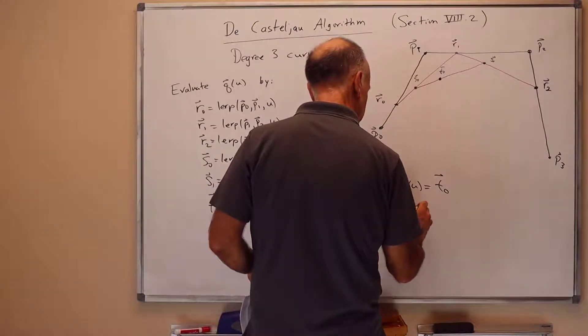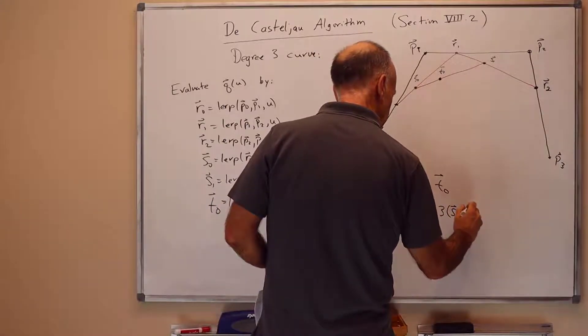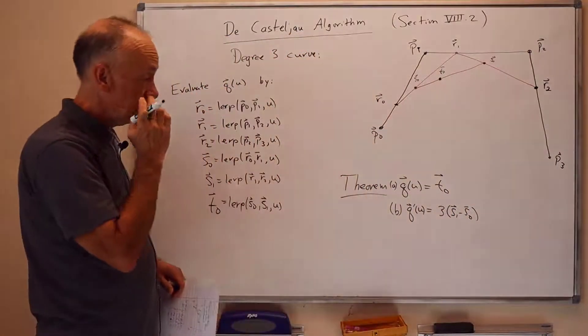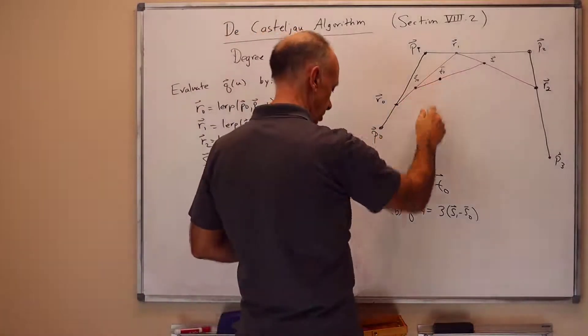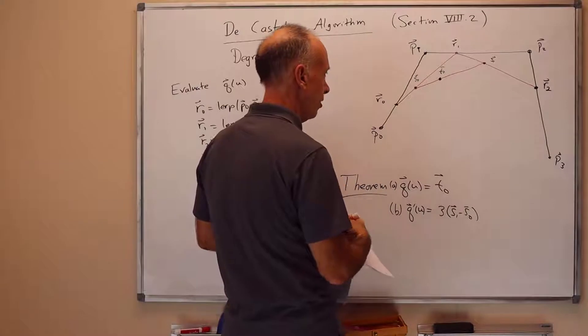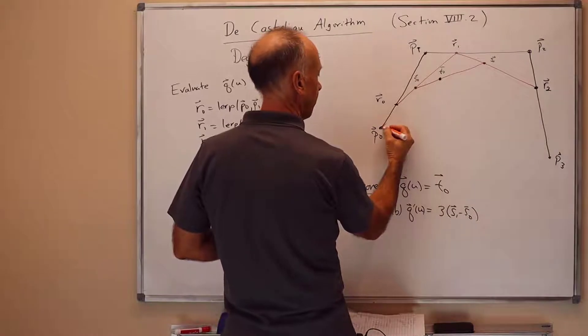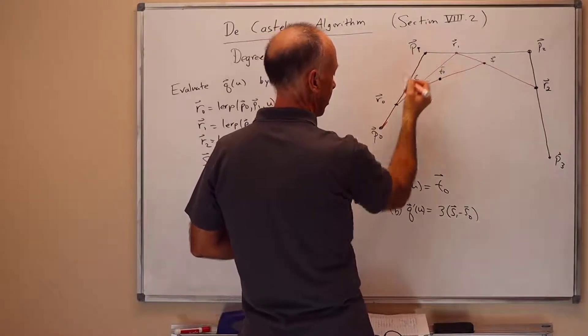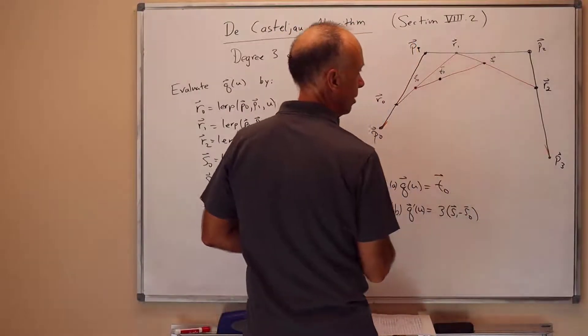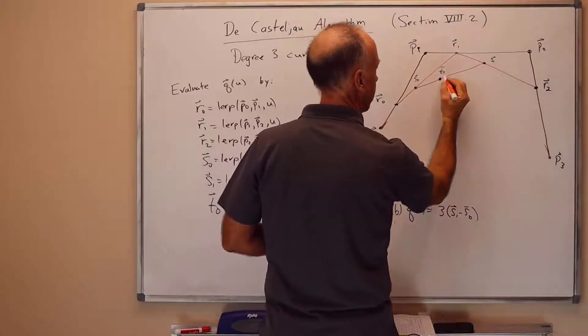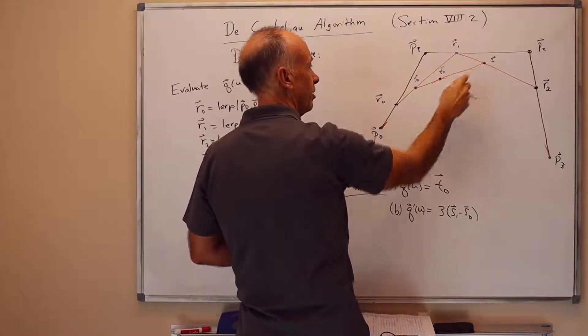Part B of the theorem is that the derivative of Q of U is 3 times S1 minus S0. So this tells us, in particular, that the curve is tangent to the red line here at T0, to the line joining S0 and T0. So if I try to draw the curve Q of U, we know it starts off tangent here to the control polygon on the line segment joining P0 and P1. We know it ends up tangent here on the edge of the control polygon joining P2 and P3. Part B of the theorem tells us it's also tangent here at T0 with line segment joining S0 and S1.